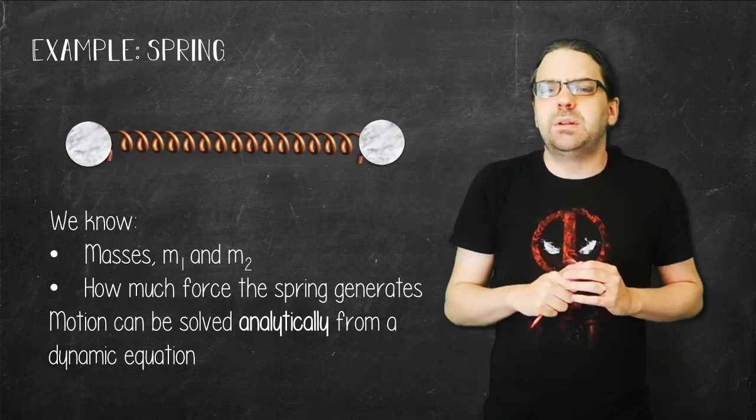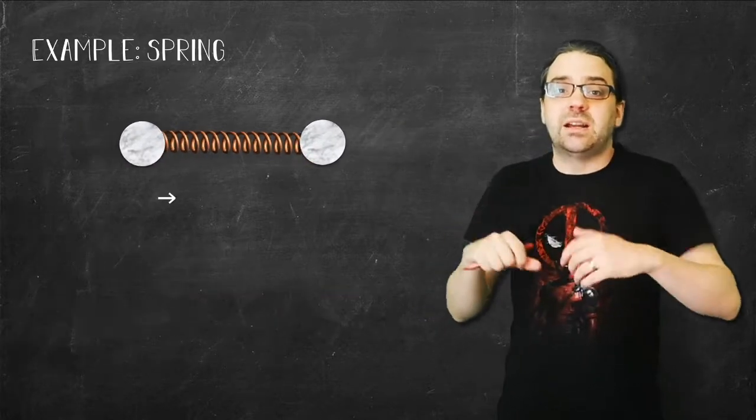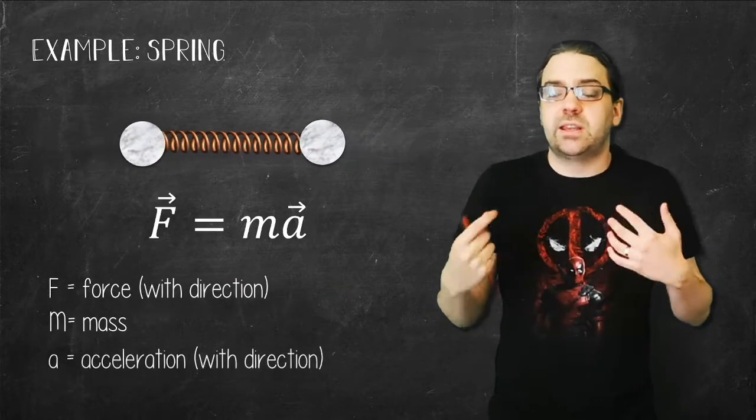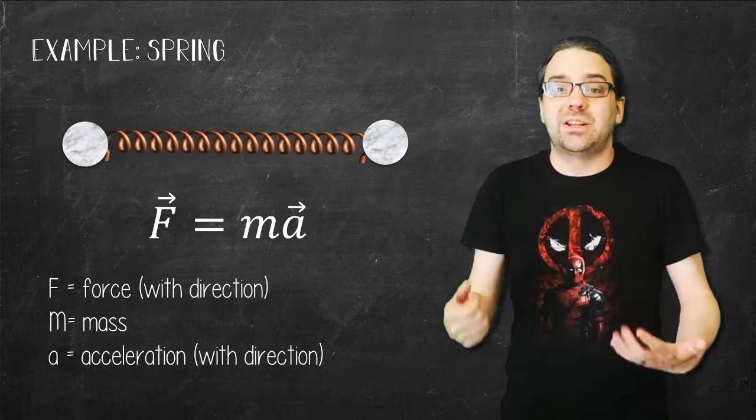First, we need to build a dynamic equation to describe how they're going to move. A dynamic equation is something that's based on the second law of motion, or F equals MA, or force equals mass times acceleration.